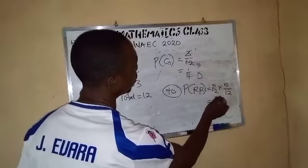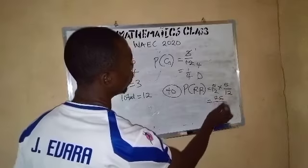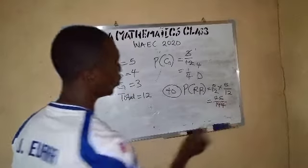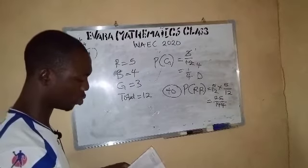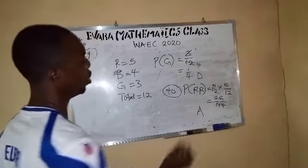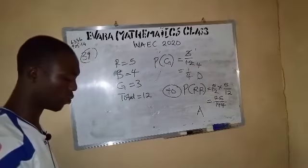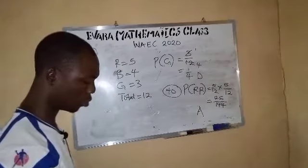So 5 multiplied by 5, 25. 12 times 12 is 144. And this is option A, option A, 25 over 144.